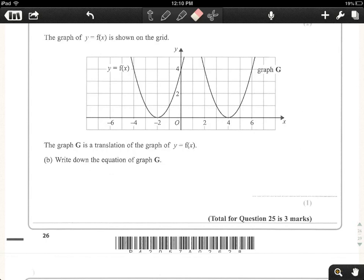Now on this particular graph, the graph of y equals f of x is shown on the grid. So here's f of x. The graph G is a translation of the graph y equals f of x. And we have to write down the equation of graph G.